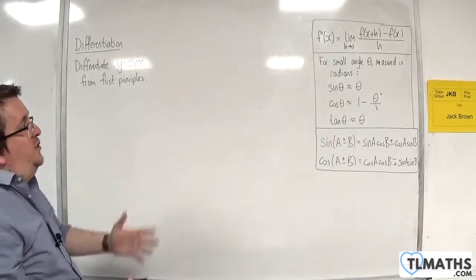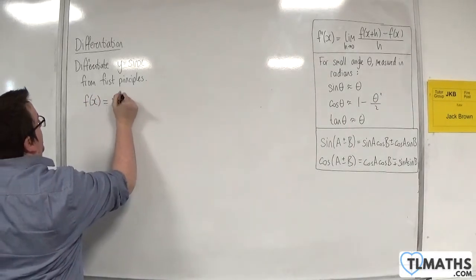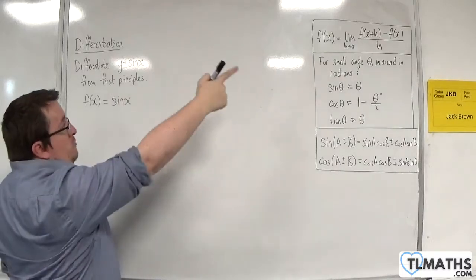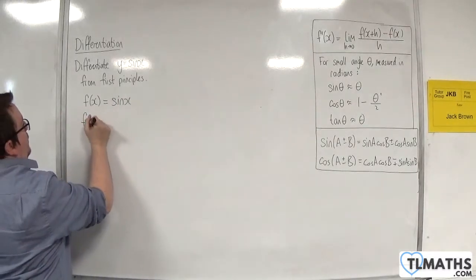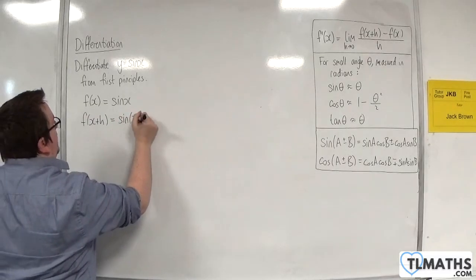So first of all, I need to identify that I'm going to have f of x as sin x. And the formula requires me to have f of x plus h. So f of x plus h is equal to sin of x plus h.